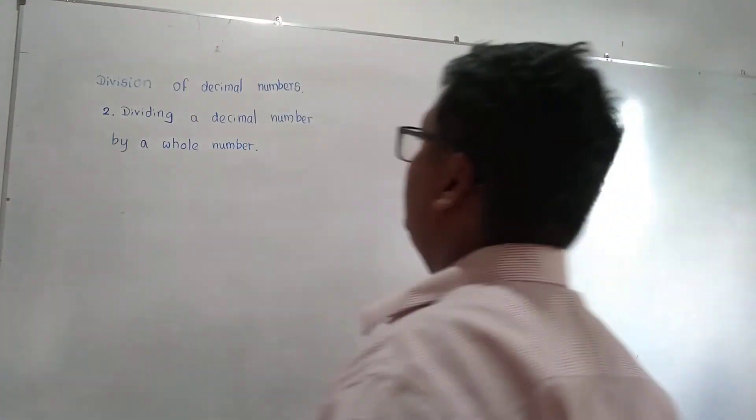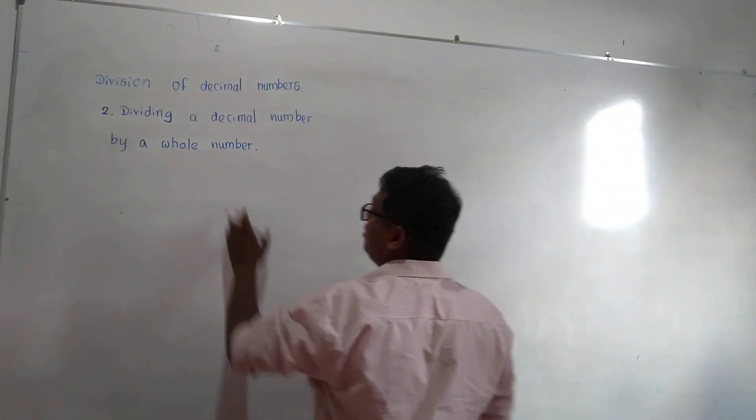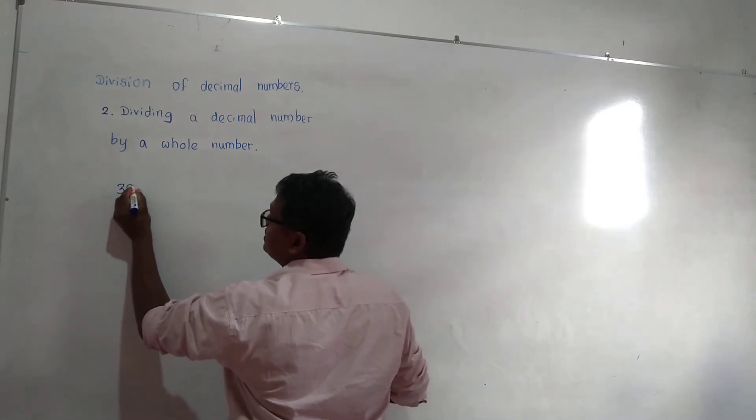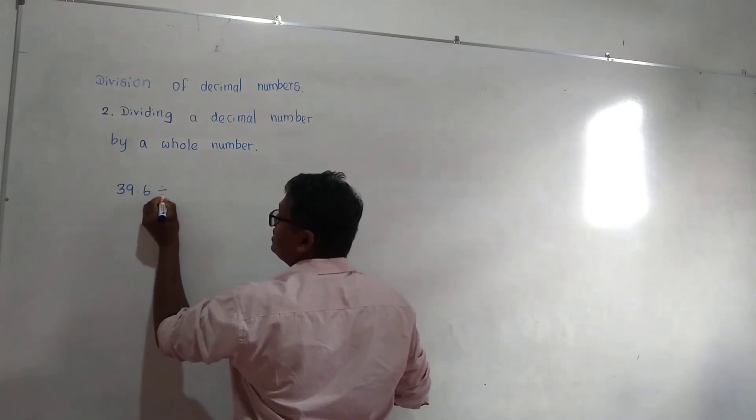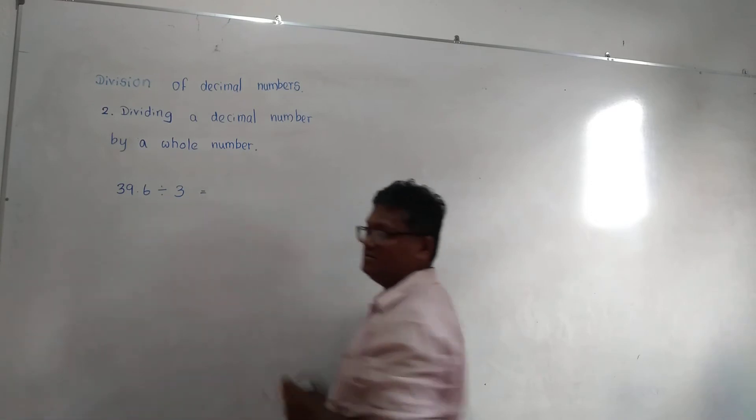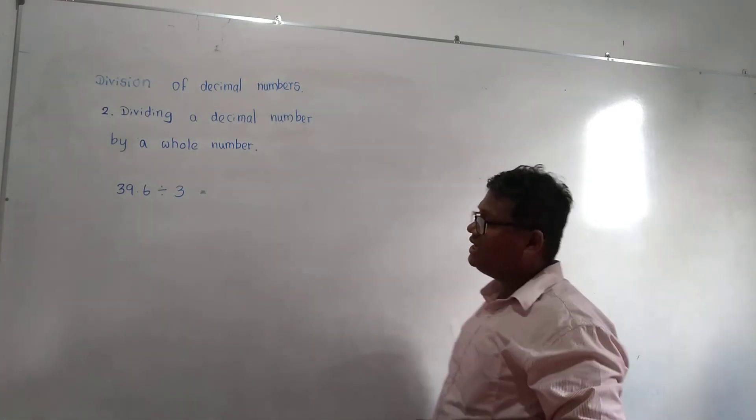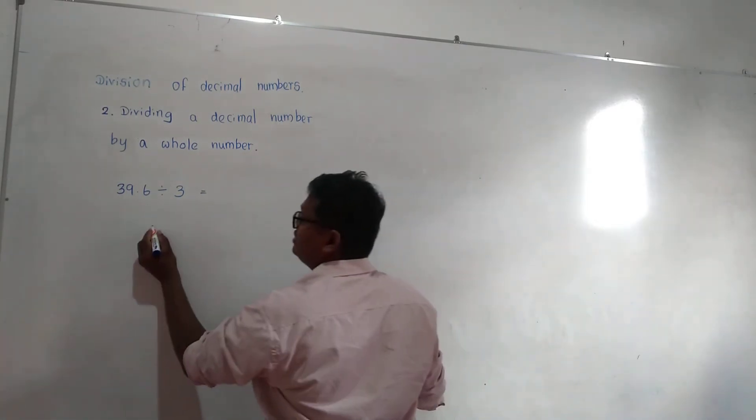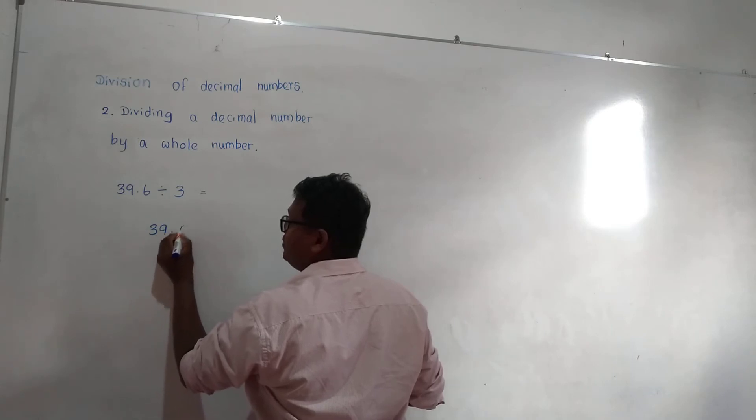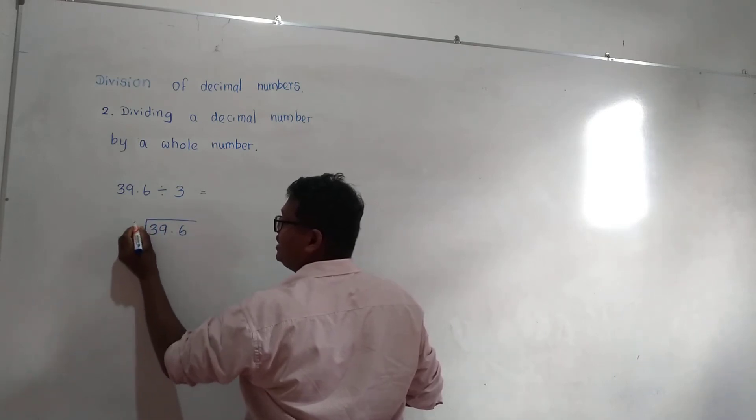Dividing a decimal number by a whole number. For example, 39.6 divided by 3. For this you can use long division method.